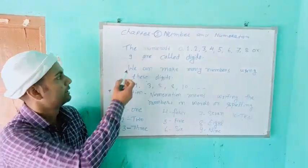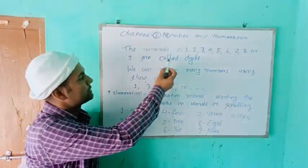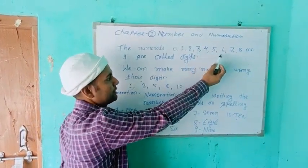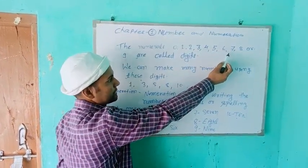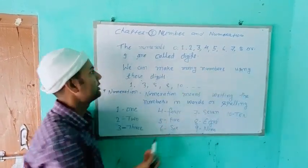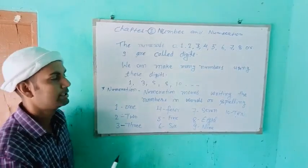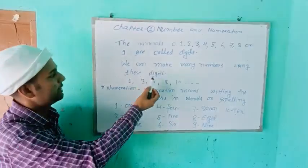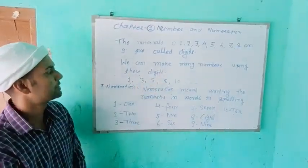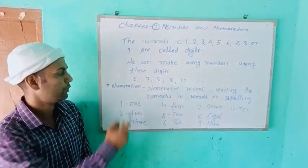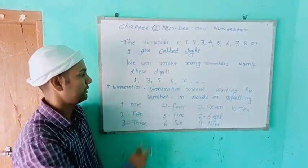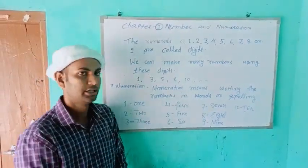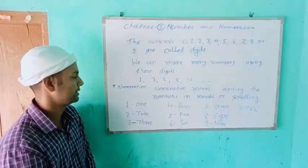Let's see here. The numerals 0, 1, 2, 3, 4, 5, 6, 7, 8 and 9 are called digits. We can make many numbers using these digits. For example: 1, 3, 5, 8, 10 — these are numbers.